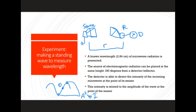We'll be able to create a standing wave between the source and the detector and receiver because the receiver doesn't only absorb the radiation, but it also reflects it back. When the detector detects a value of zero, or its minimum point, we know that we are at a standing wave. You can imagine the source sending a microwave that bounces off the receiver and comes back this way.